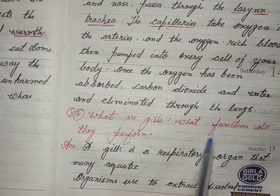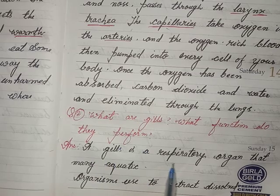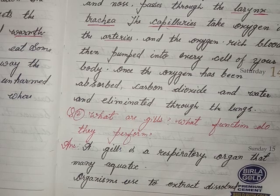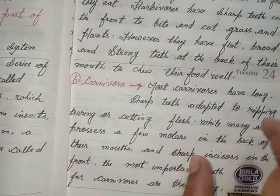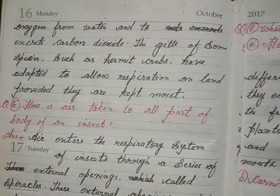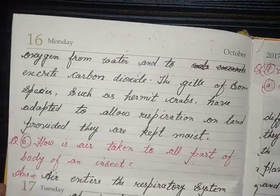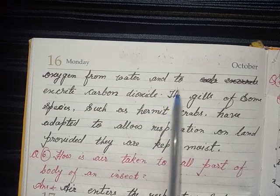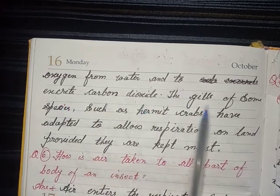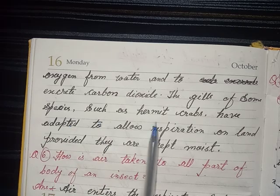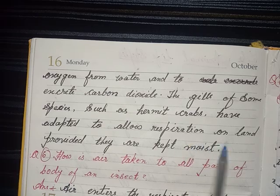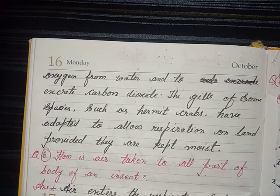Question 2 — What are gills and what function do they perform? Answer: Gills are the respiratory organs that many aquatic organisms use to extract dissolved oxygen from water and to excrete carbon dioxide. The gills of some species, such as hermit crabs, have adapted to allow respiration on land, provided they are kept moist.